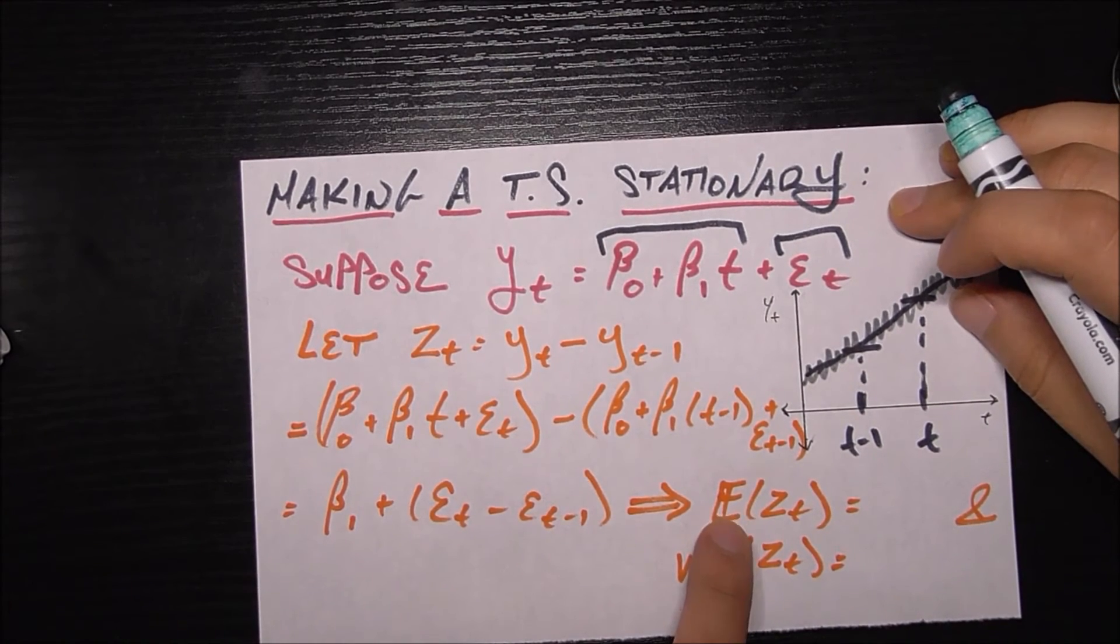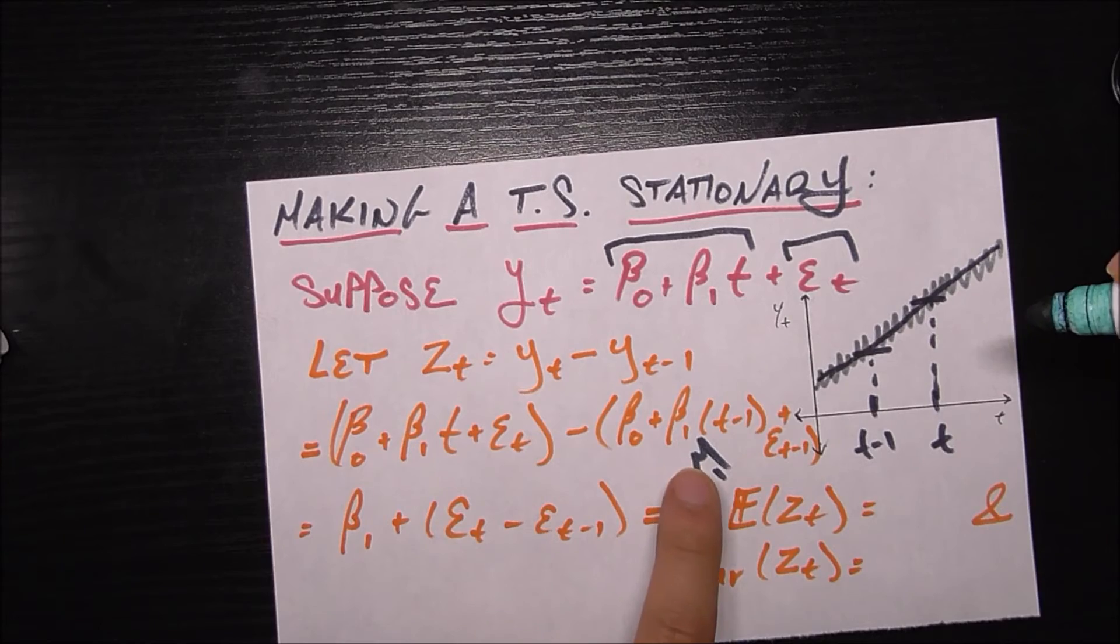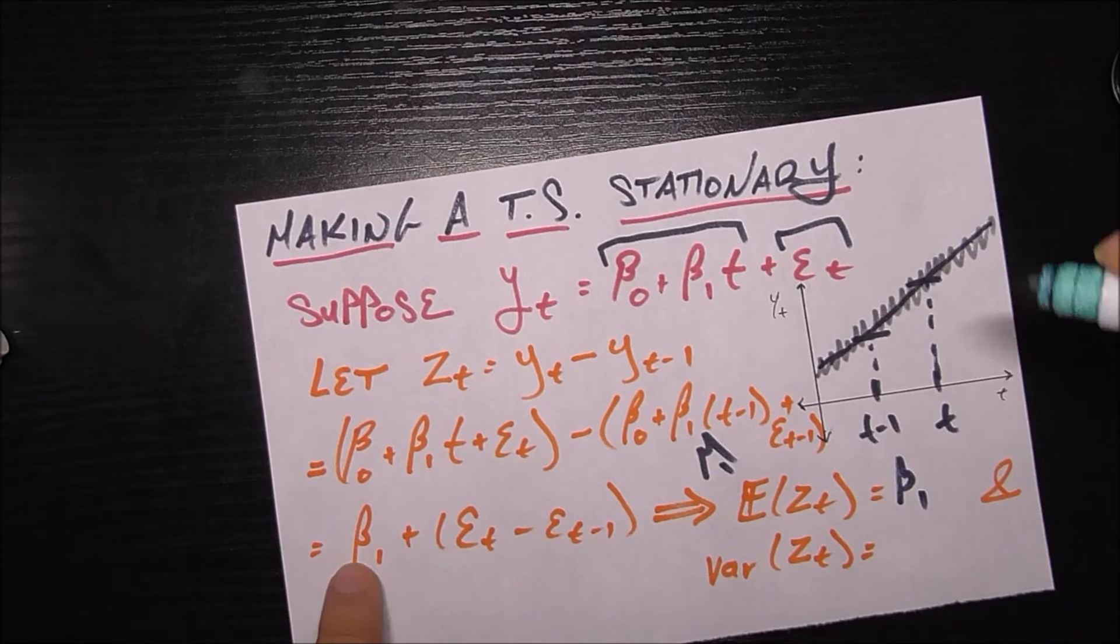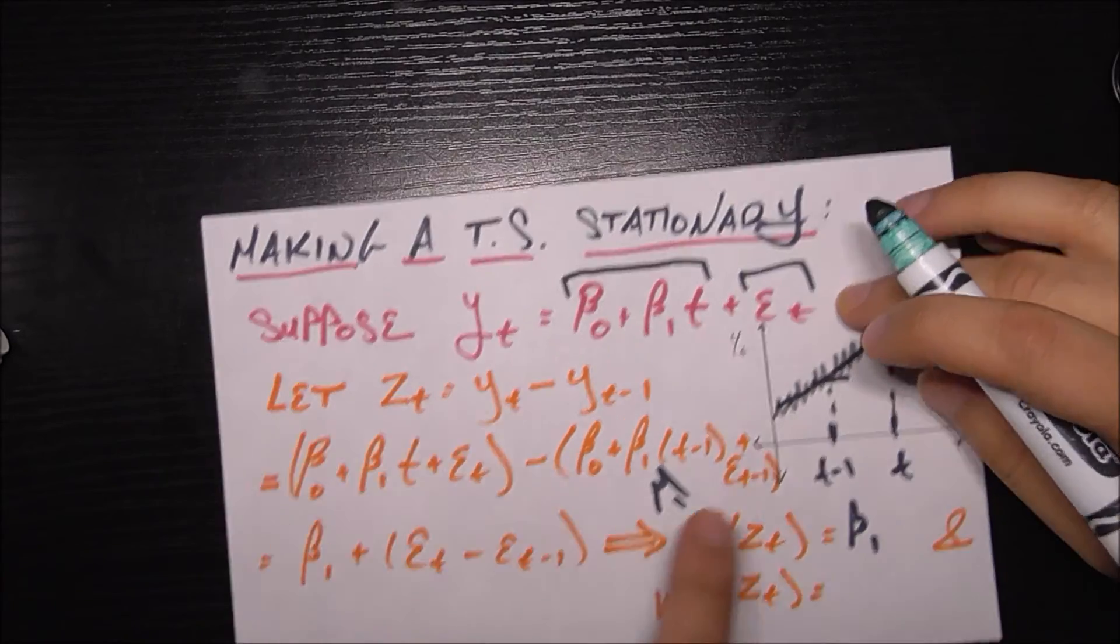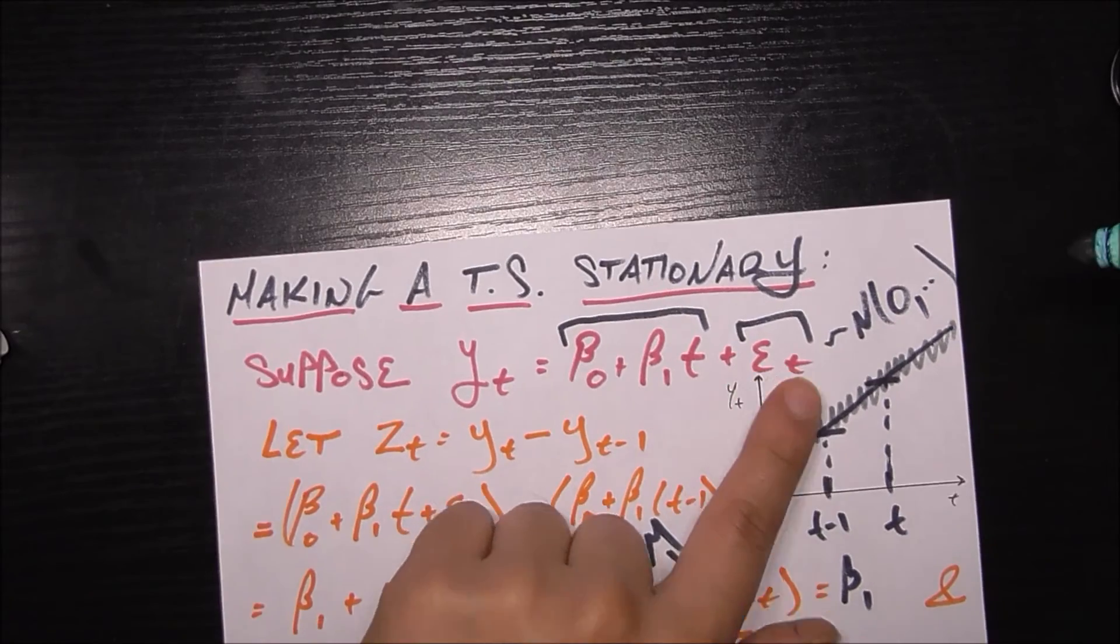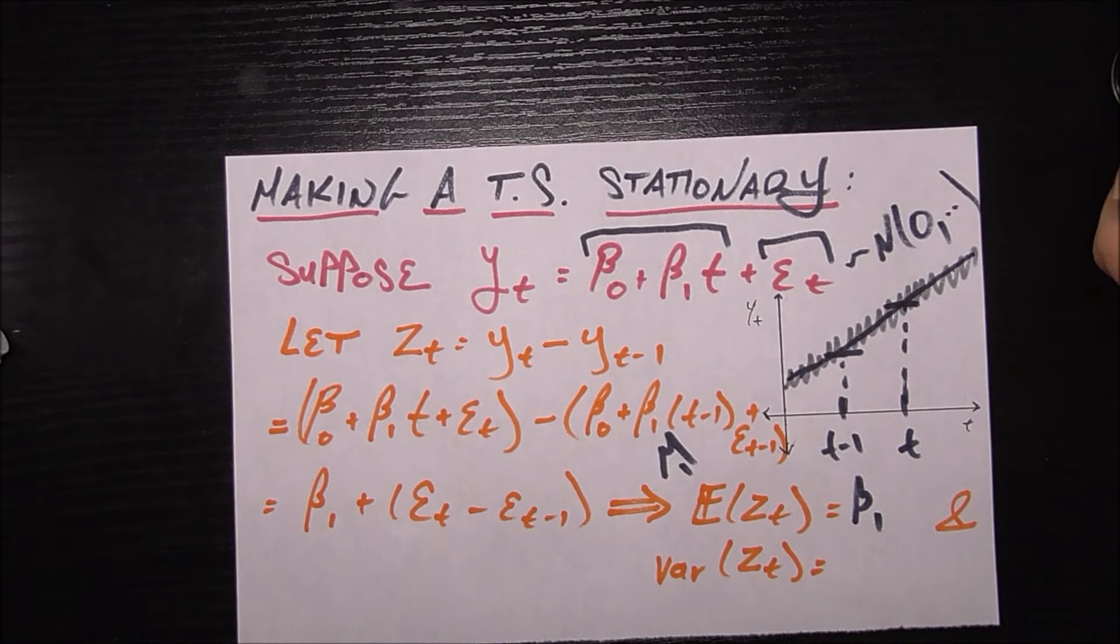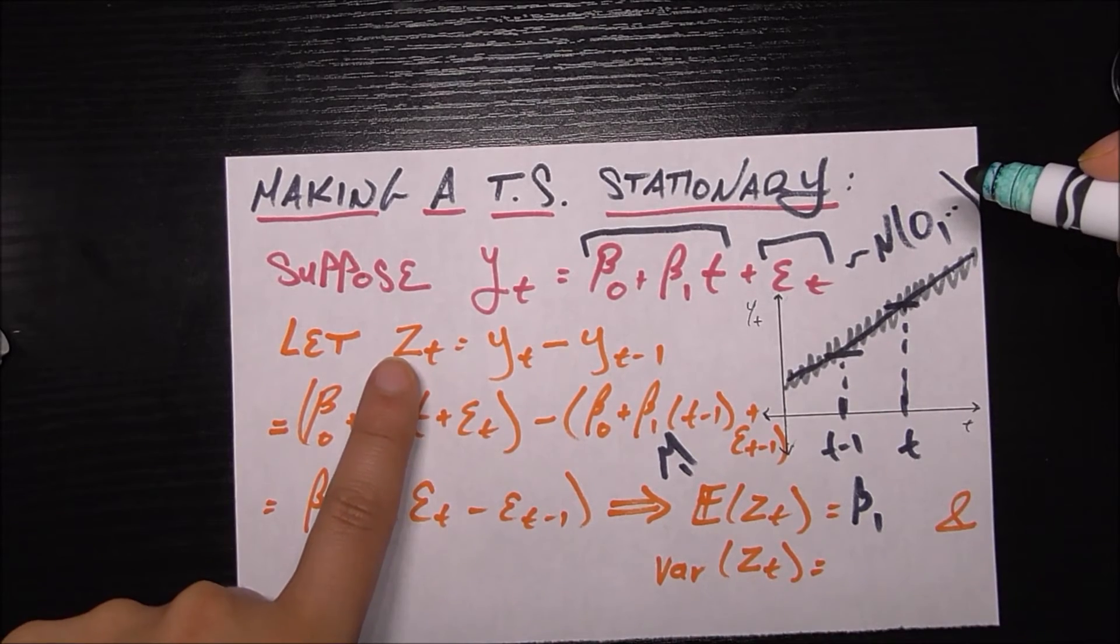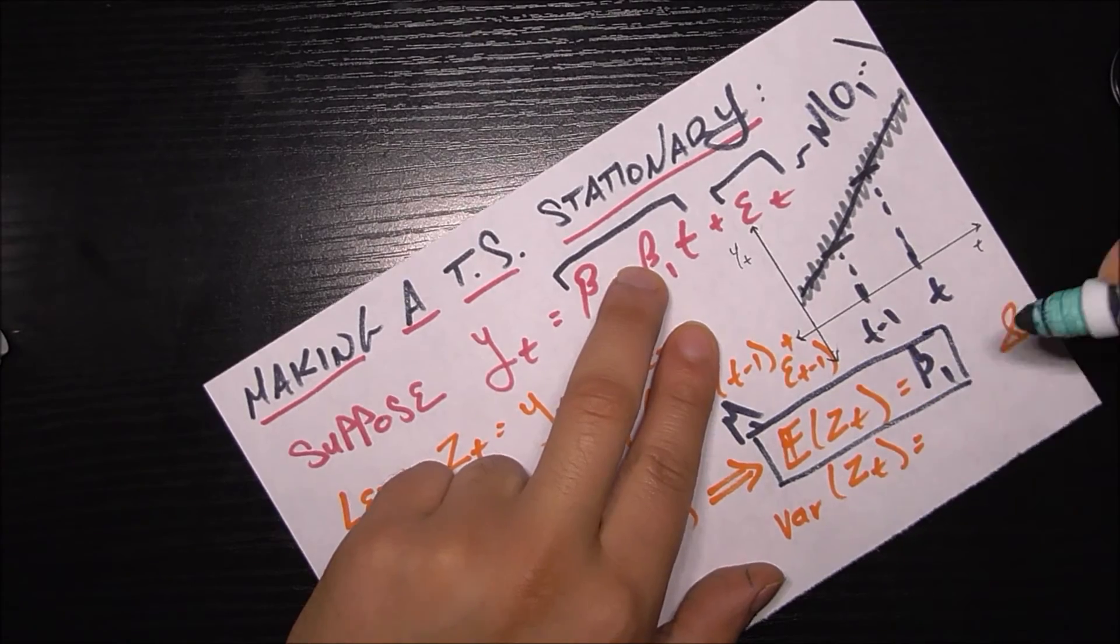So what is the expected value if I took the expectation of z_t, which is another way of just saying mean? That would be β₁, right, because this is just a constant and it's not affected by the expected value. If we take the expected value of ε_t, that's going to be zero because this is assumed to be some kind of normal zero something process, so it's going to have a mean zero. For that same reason, ε_{t-1} being also an independent normal zero something process is going to have mean zero. So that gives me that the mean of this new time series z_t is simply β₁, a.k.a. the mean of this new series is constant.